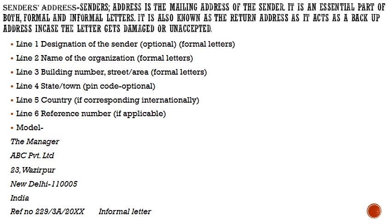In line 1, you mention the designation of the sender. In the second line, the name of the organisation. Third line, building name, area, street, etc. In the fourth line, state or town. In the fifth line, country. And the sixth line, reference number. A model has been provided here — kindly look into it.